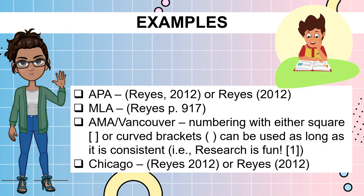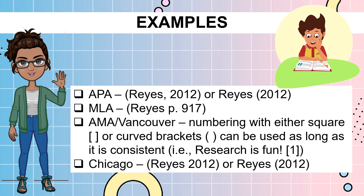Let's take these examples. For APA: Reyes, 2012 — or Reyes (2012). For MLA: (Reyes). For the AMA or Vancouver system, numbering with either square brackets or curve brackets can be used, as long as it is consistent — for example, 'Research is fun [1].' For the Chicago system: Reyes, 2012 — or Reyes (2012).